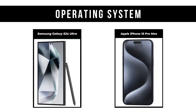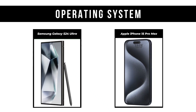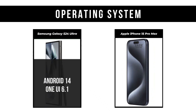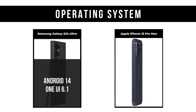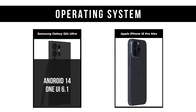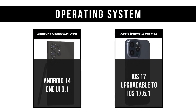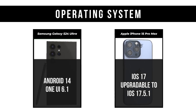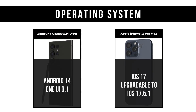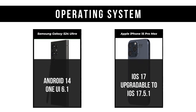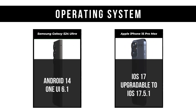Operating System: Samsung Galaxy S24 Ultra is Android 14, One UI 6.1; Apple iPhone 15 Pro Max is iOS 17, upgradable to iOS 17.5.1.